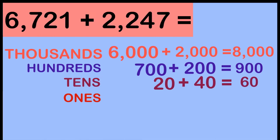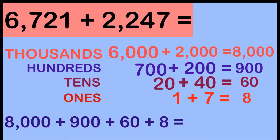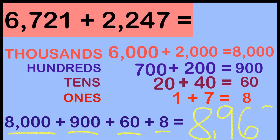At the ones place, we have digit 1, and its value is 1. While on the second number, we have digit 7, and its value is 7. If we add 1 and 7, we will have 8. So 8,000 plus 900 plus 60 plus 8 is equal to 8,968. So the sum of 6,721 and 2,247 is 8,968. If you have any questions regarding addition using decompose strategy, you can write down your questions at the comment section below.